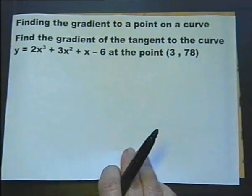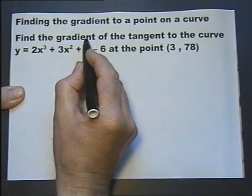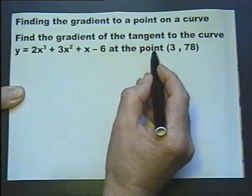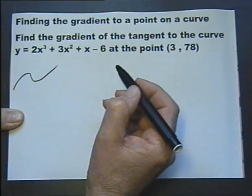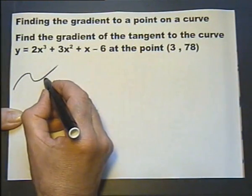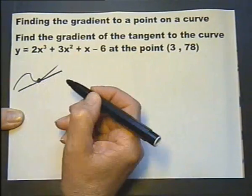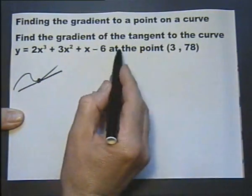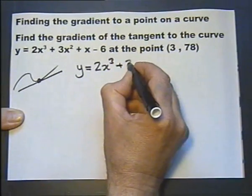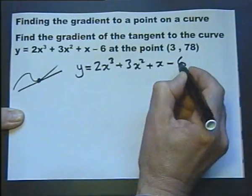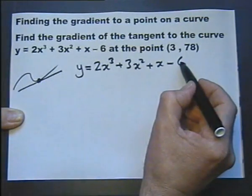Let's remind ourselves about finding the gradient to a point on a curve, by finding the gradient of the tangent to this particular curve at this particular point. If I drew this graph, it will be a cubic — something of that fashion. If I found the coordinate x=3, y=78, then I want to find the gradient of the tangent to the curve at that point. The equation of the graph works out the y-coordinates; substituting x=3 into this equation gives 78.